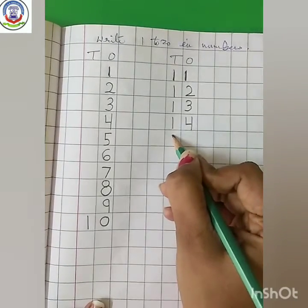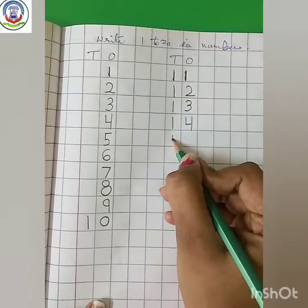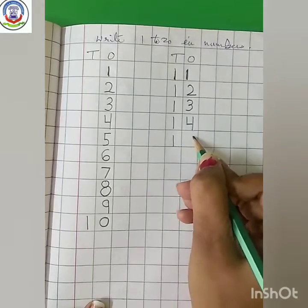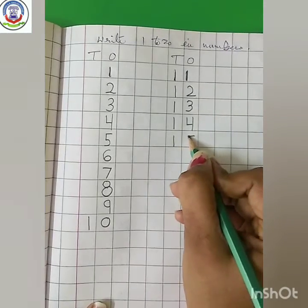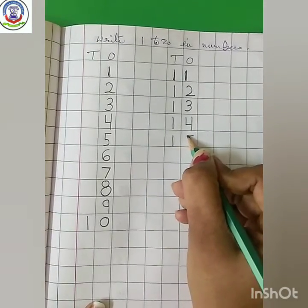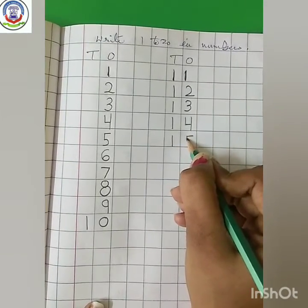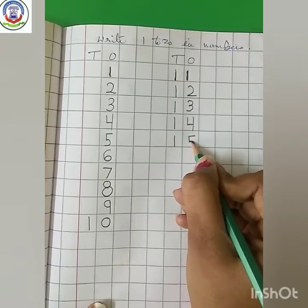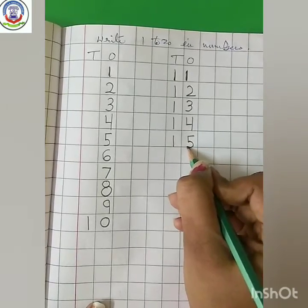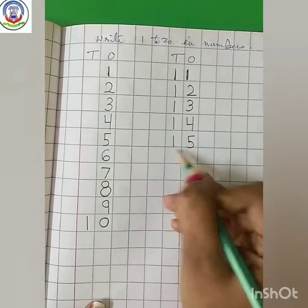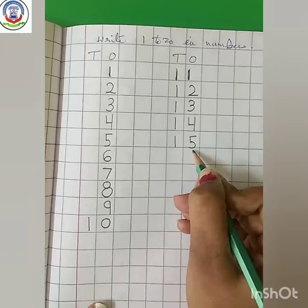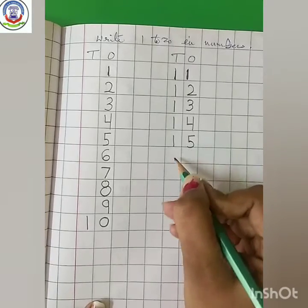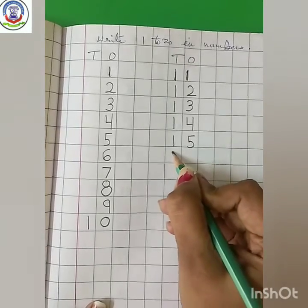10 plus 5 is 15. Next number. Standing line — 1. Make a curve, and now make another curve — 5. 10 plus 5 is 15.